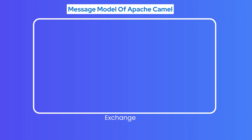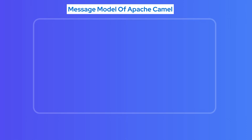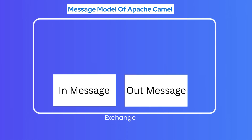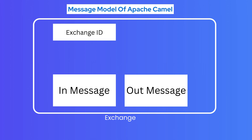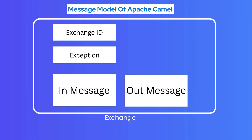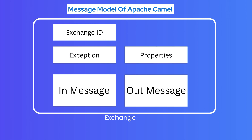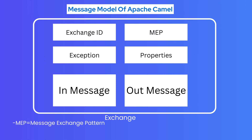Let's now quickly talk about the message model of an exchange. In an exchange message, apart from inbound and outbound messages, we have some new parameters: Exchange ID, which is a unique identifier; an Exception, which captures any exceptions in the routing process; and a set of Properties, which stores global variables for message processing. We also have MEP, which stands for Message Exchange Pattern — an enum that has different set of values, for example: In Only, In Out, In Optional Out, and In Optional Fault.